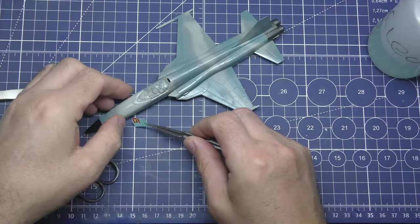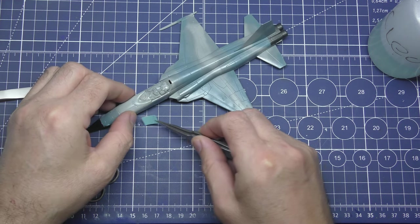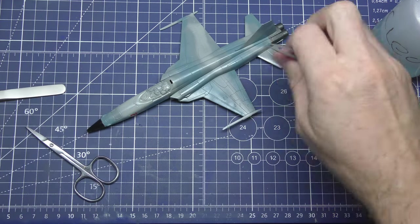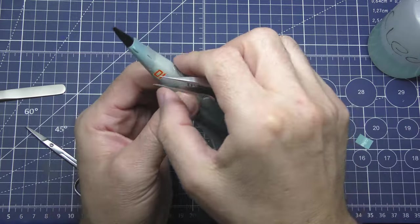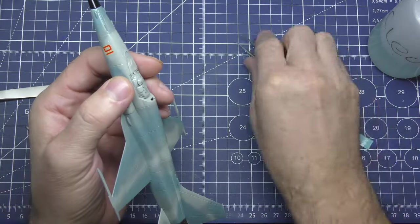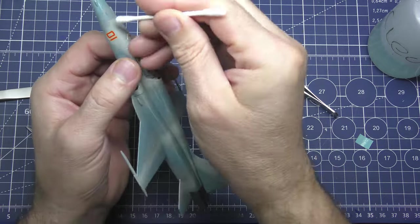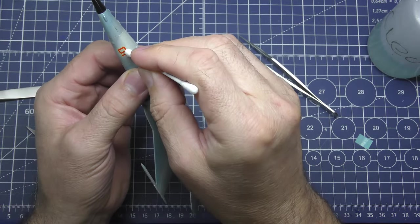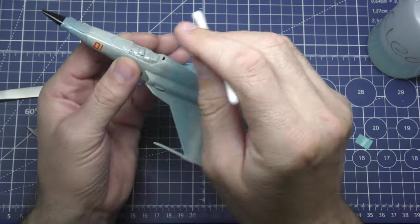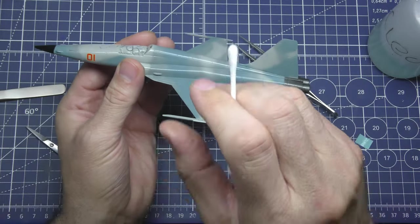So for decals, I'm using Microsol and Microset. And I do think it's a fantastic solution. The reason is it makes it look like they're painted on when they're done if you use them both.